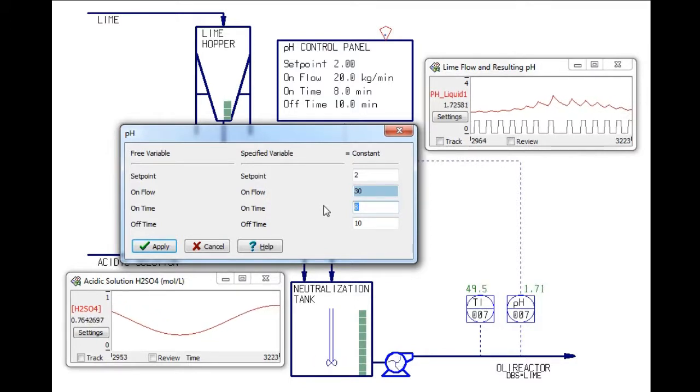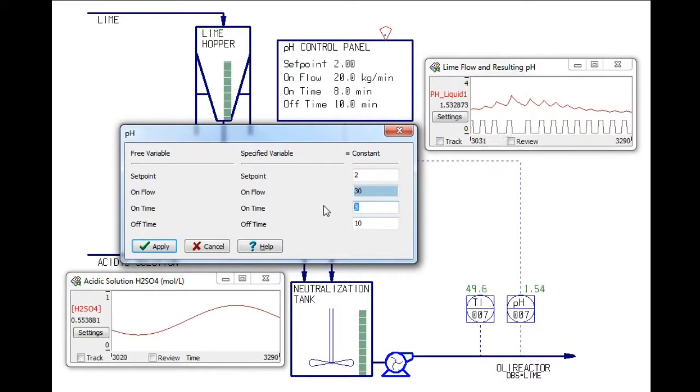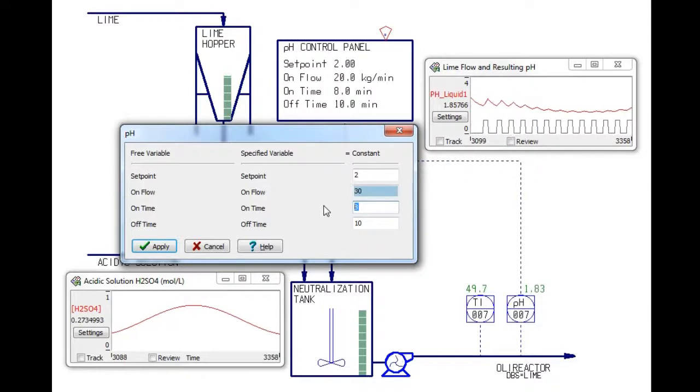With this higher feed rate, however, we may encounter the opposite problem of the pH going too high when the acid concentration is low. To counteract this, I will divide the on time and off time by half.